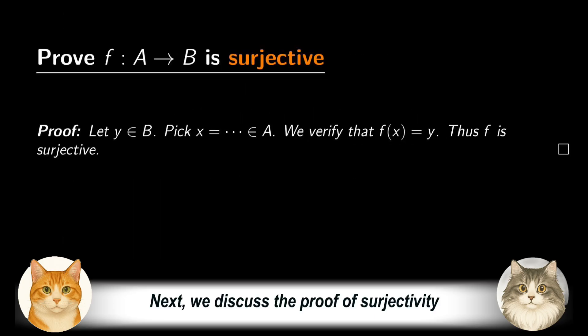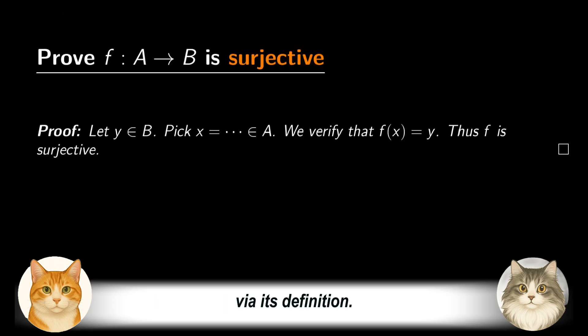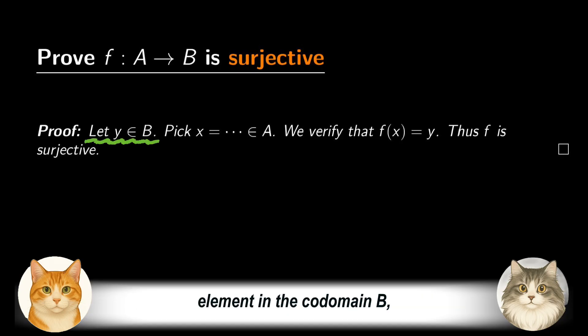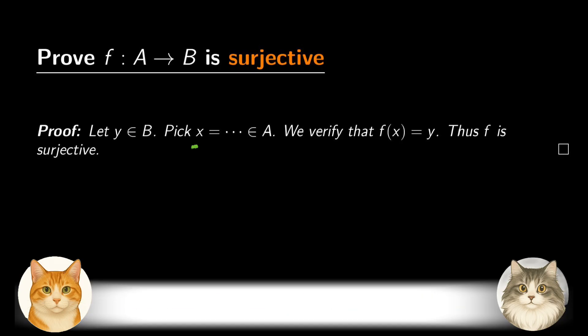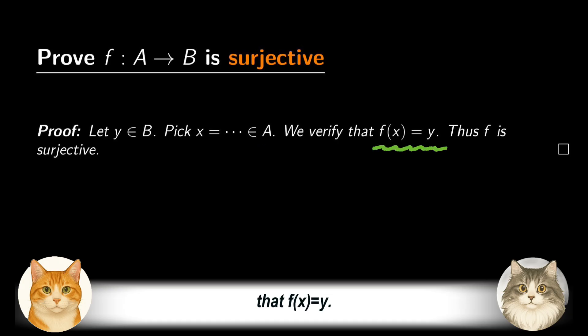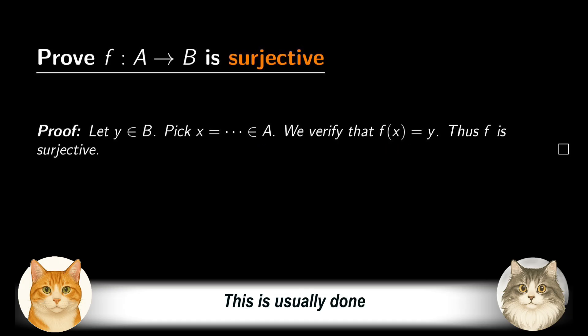Next, we discuss the proof of surjectivity via its definition. To this end, we begin by letting y be an arbitrary element in the codomain B, and we aim to find an appropriate candidate x, such that f(x) equals y. This is usually done through a two-step reverse engineering process.